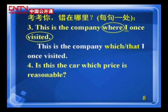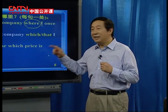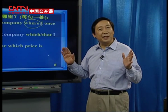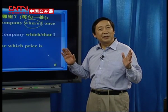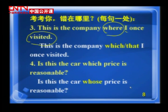第四题：Is this the car which price is reasonable? 错在哪？应该是：Is this the car whose price is reasonable? Which/that 在句子中间只能做主语和宾语，这里 price 是主语，which 做的是定语，所以应该用 whose。